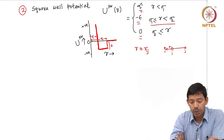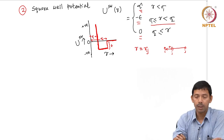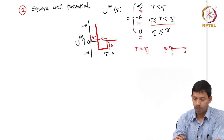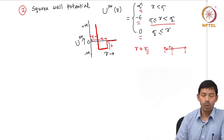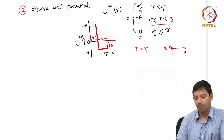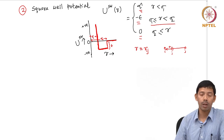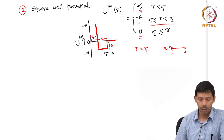The square well potential has an attractive term via minus epsilon, so it is a little more complex than the hard sphere potential in the sense that it includes an attractive term, whereas the hard sphere did not.